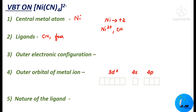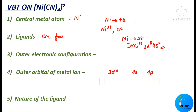Now let us find the outer electronic configuration of Ni²⁺. The atomic number of Ni is 28. The nearest noble gas is argon (atomic number 18), so the remaining 10 electrons give Ni the configuration 3d⁸ 4s². For Ni²⁺, the 4s² electrons are removed, giving an outer electronic configuration of 3d⁸ 4s⁰.